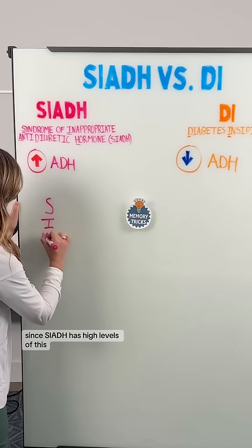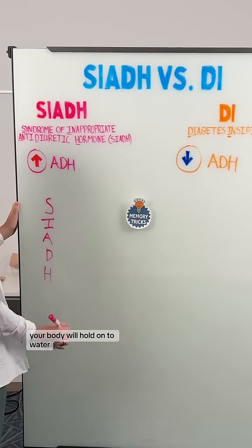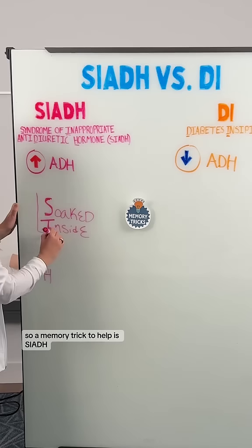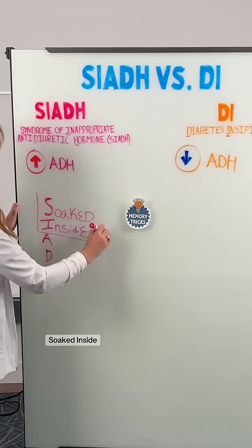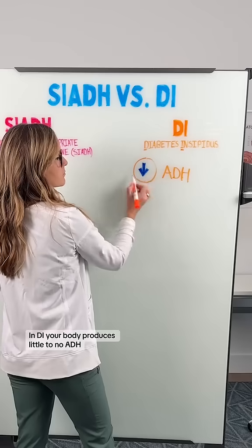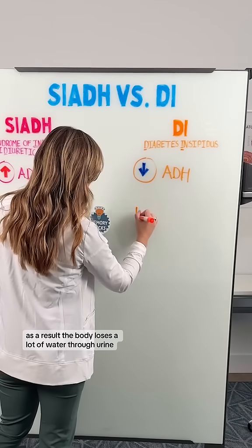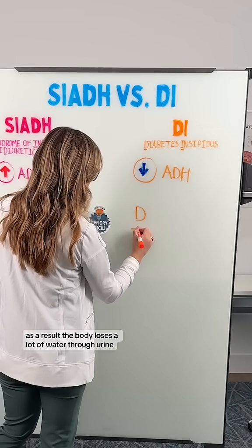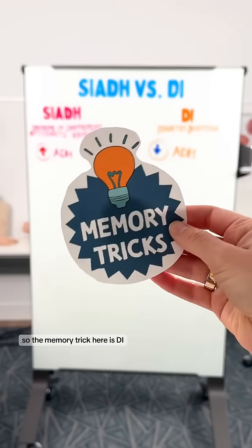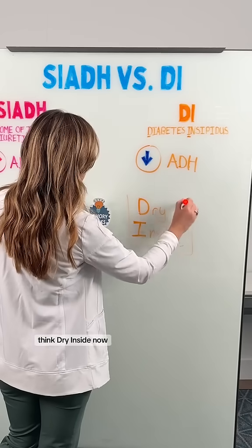Since SIADH has high levels of ADH, your body will hold on to water. A memory trick to help is: SIADH — think soaked inside. In DI, your body produces little to no ADH. As a result, the body loses a lot of water through urine. The memory trick here is: DI — think dry inside.